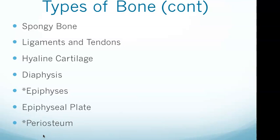Spongy bone is less dense than compact bone, located at the ends of bones, and contains bone marrow, which is the site of red blood cell production. Compact bone supports the body and stores calcium. Ligaments attach bone to bone, while tendons attach muscle to bone — a basic distinction you could easily be tested on.